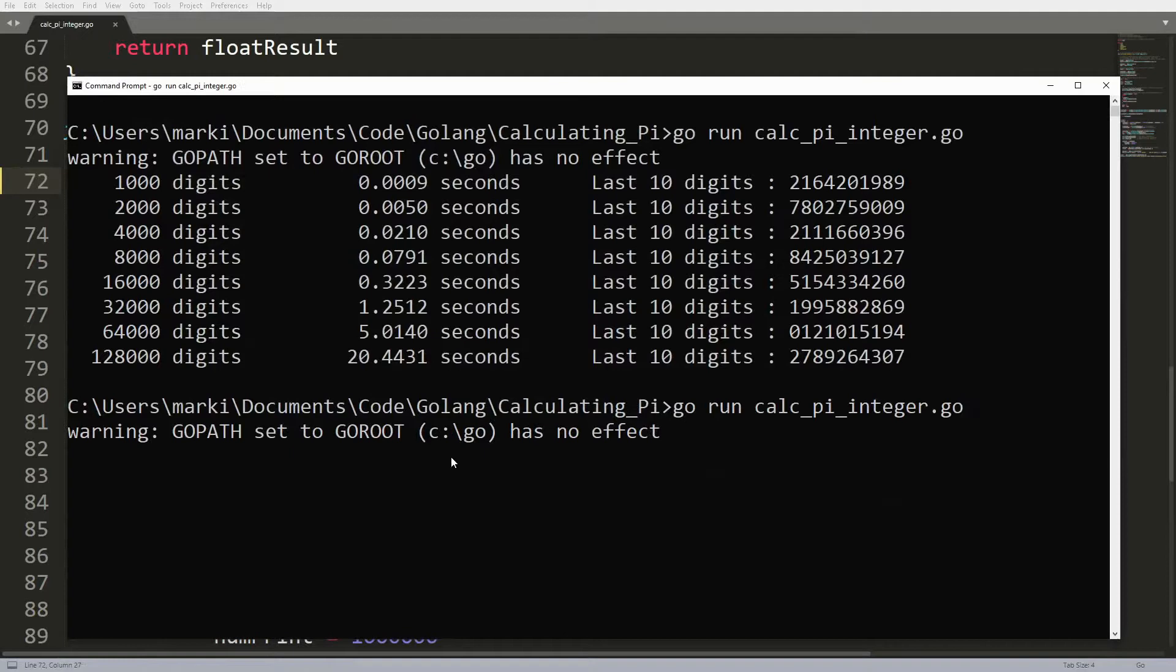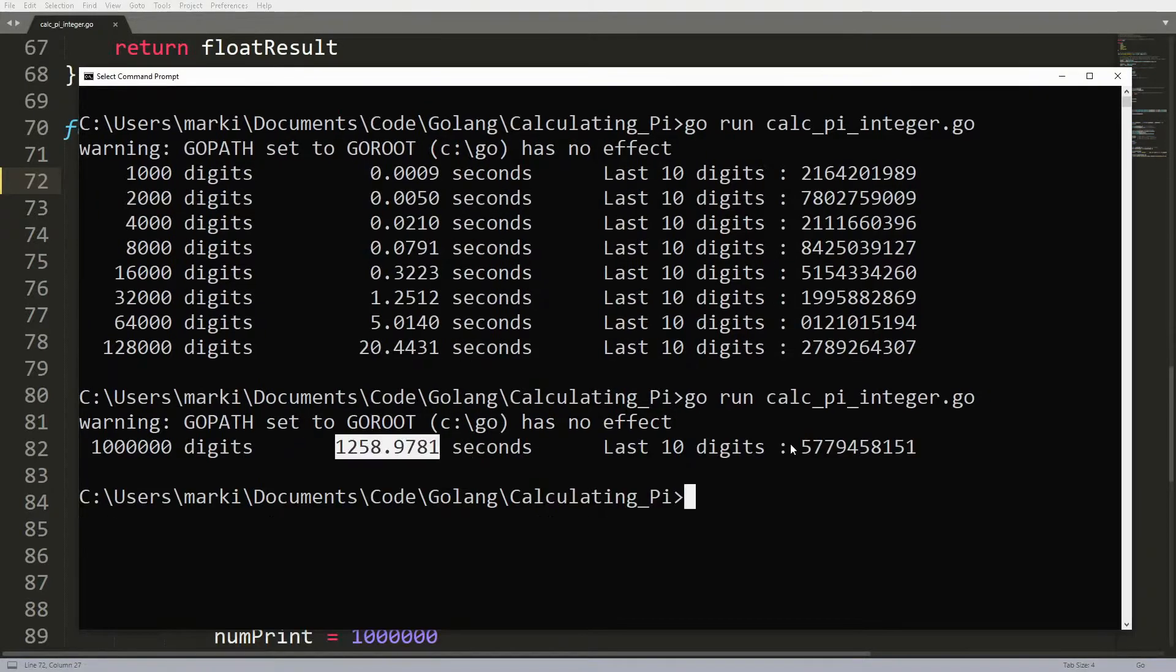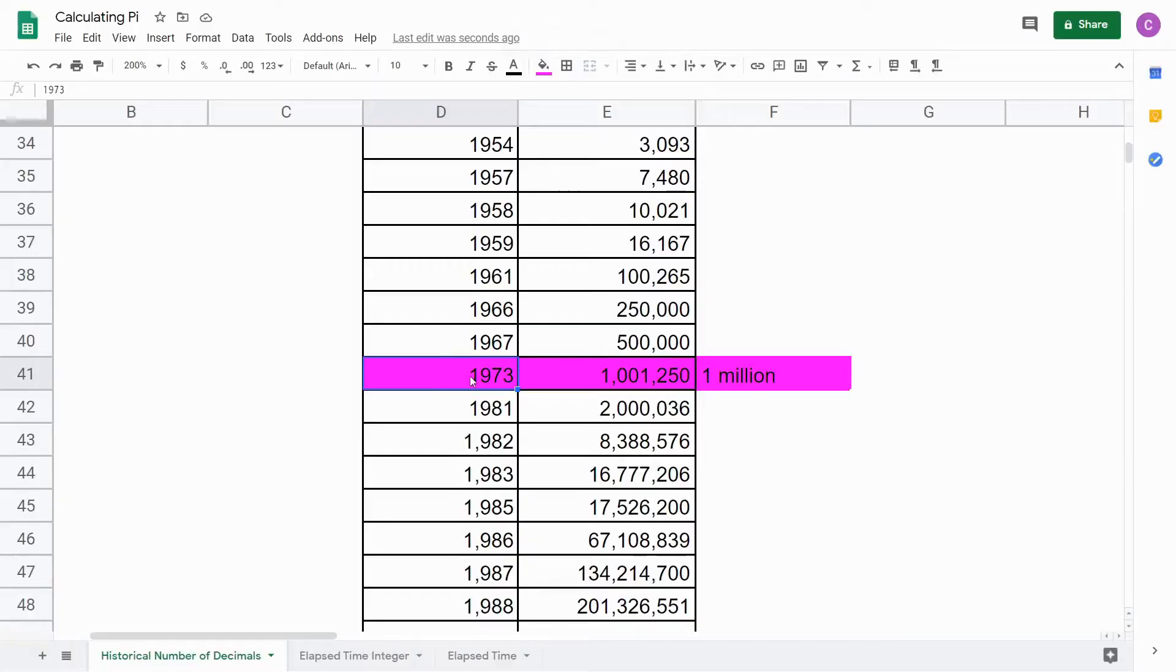What we get is that the last 10 digits of the first million are 577-945-8151. We did it. We beat 1970. It took us 20 minutes of running the program plus a couple days of writing the program. Since it took about 20 minutes to get 1,000,000 decimals and every double of digits gets 4 times longer, that means we could expect 10,000,000 digits to take 100 times longer, which is around 2,000 minutes or 33 hours. So it's conceivable we could run this and 10,000,000 digits would get us past 1982, but we're not going to do it right now.